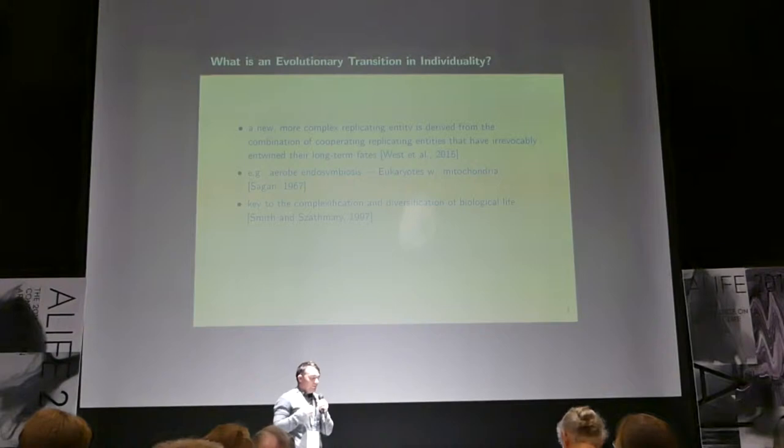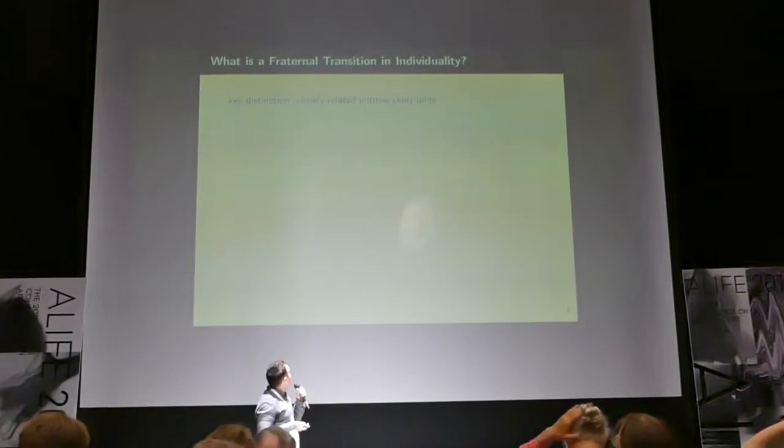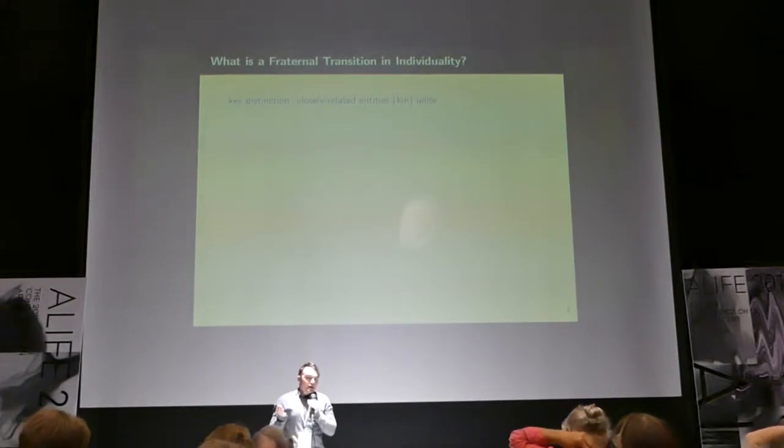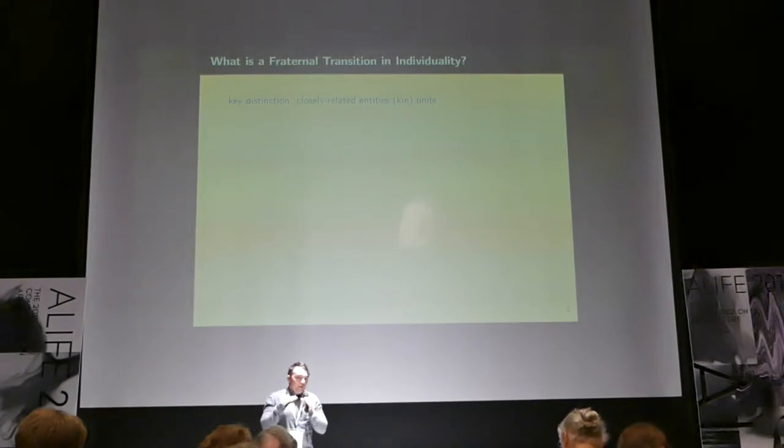And this process has been clued as to being key to the diversification and complexification of life. And because of that, it's thought to be key with respect to open-ended evolution. So, what exactly is a fraternal transition of individuality?